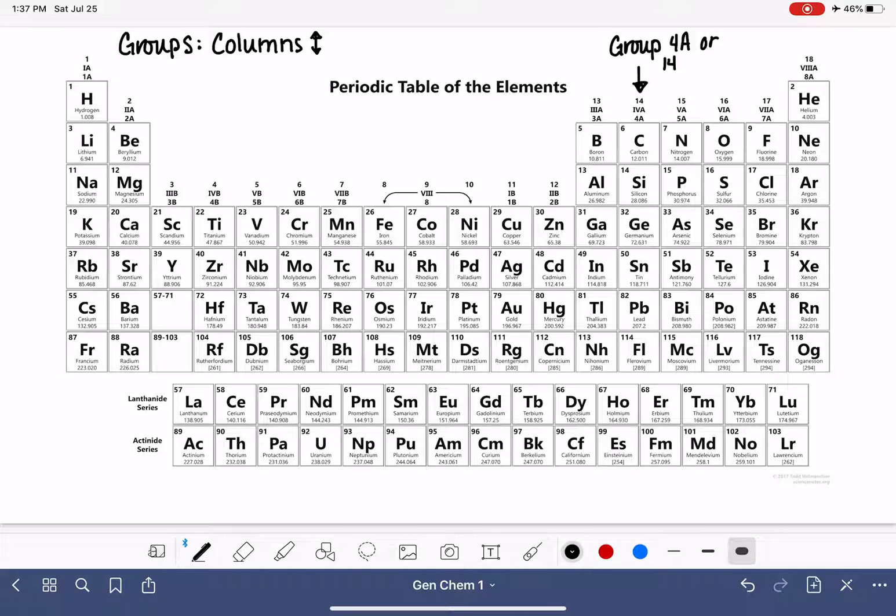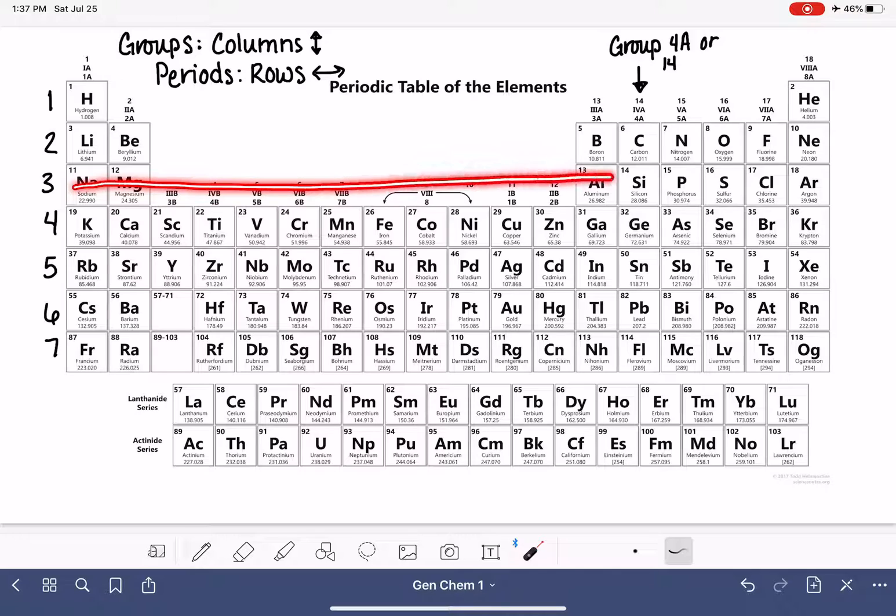We also have periods, which are not numbered on this periodic table, because they're not talked about quite as often. Periods are the rows, the horizontal rows on the periodic table, and they are numbered 1 through 7. So, I'm filling their numbers in right now. So, if I said, find me an element that is in period 3, you would choose any one of these guys right here. These are all elements that are in period 3.